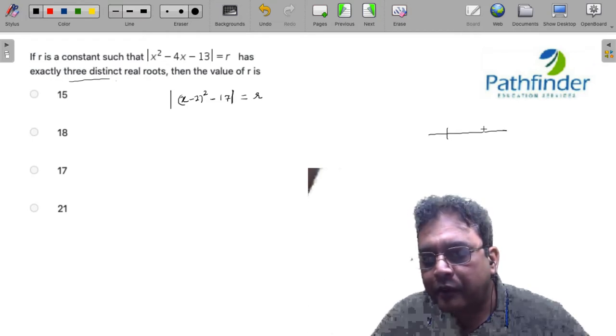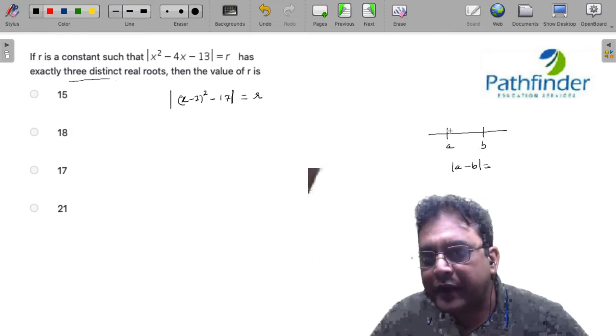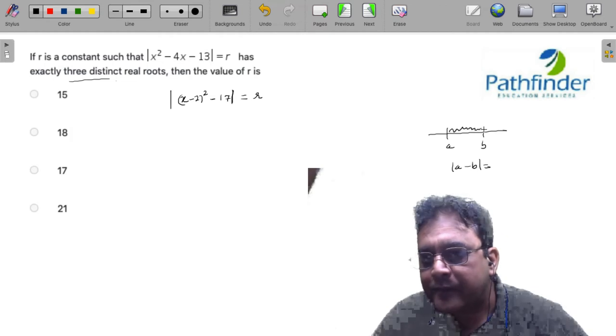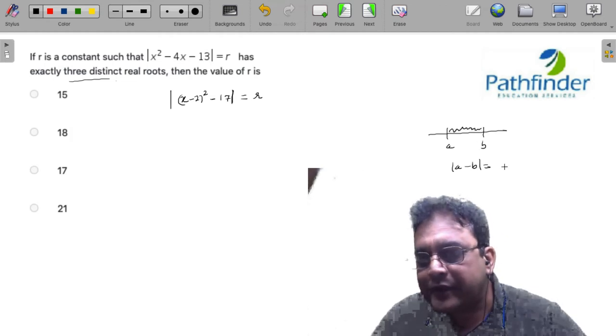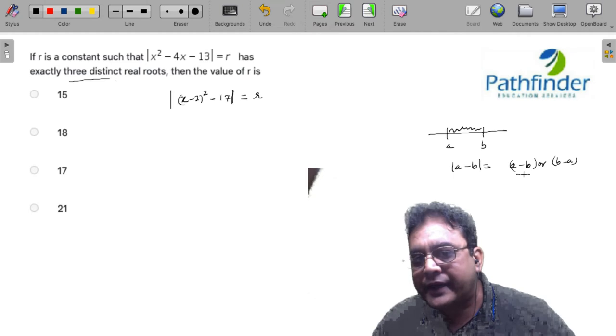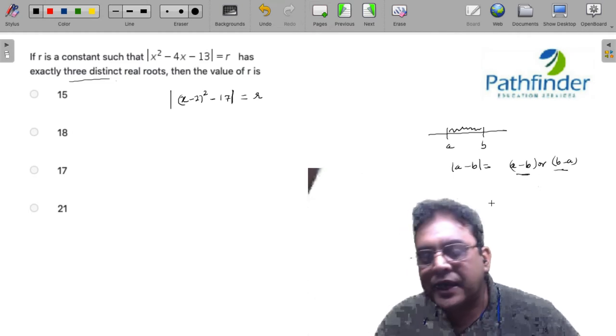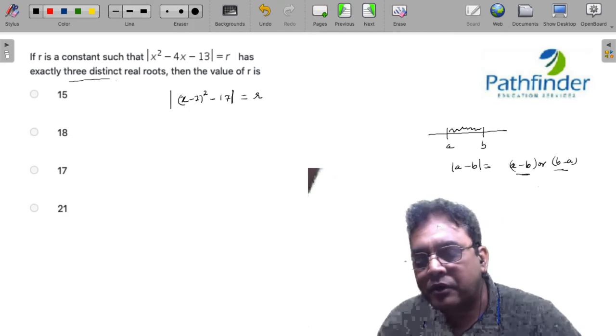You know that |a - b| is always the distance between a and b, so I can write |a - b| as either a - b or b - a. These are two possibilities. If a is greater I can write it as a - b, if b is greater I can write it as b - a after removing the mod operator.